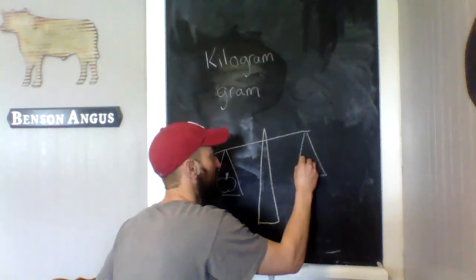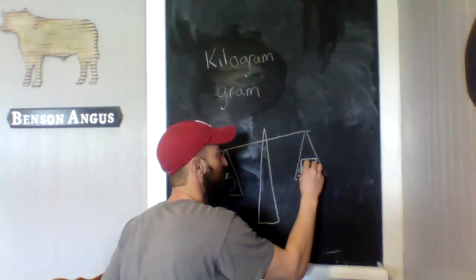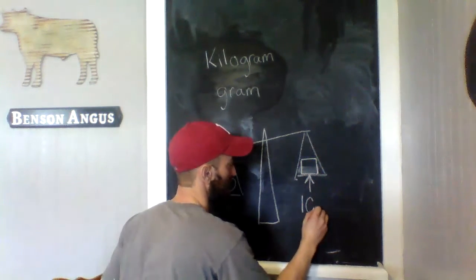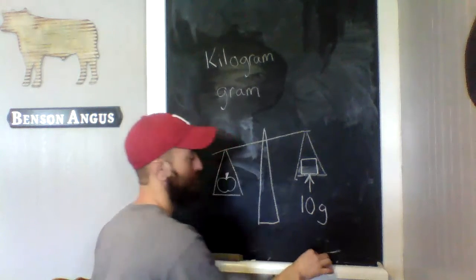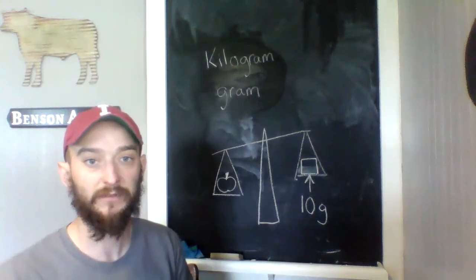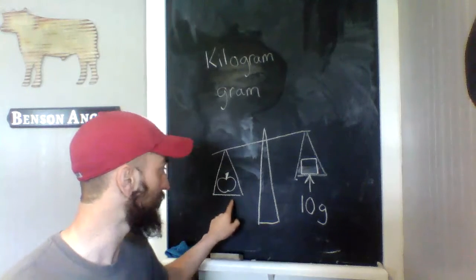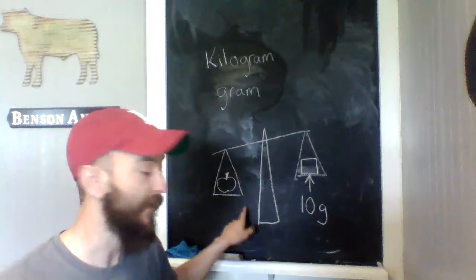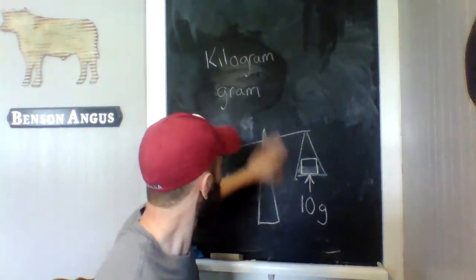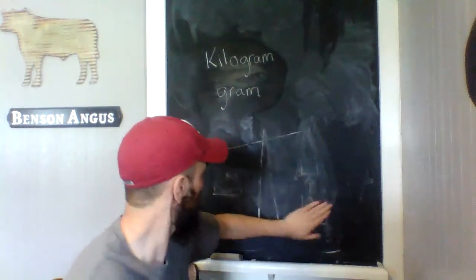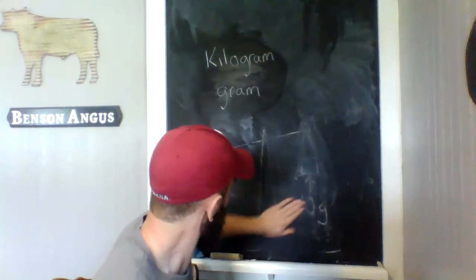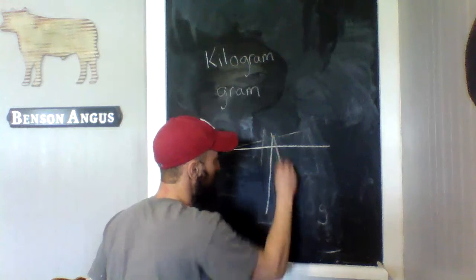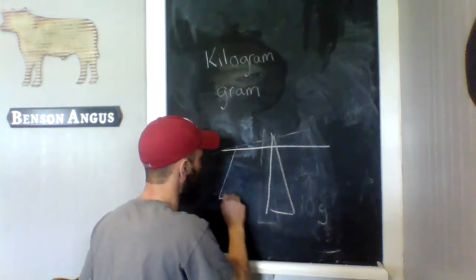So if it weighs 10 grams and the apple's pulling it down, that means it's still heavier. The apple's more than 10 grams. If my scale is straight, that means they weigh the same.